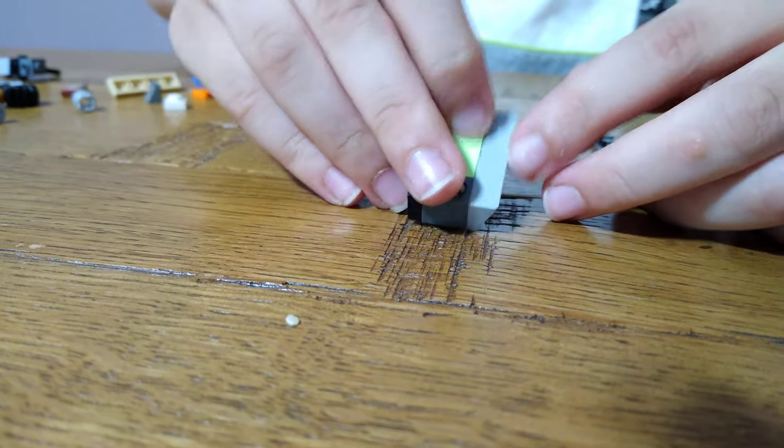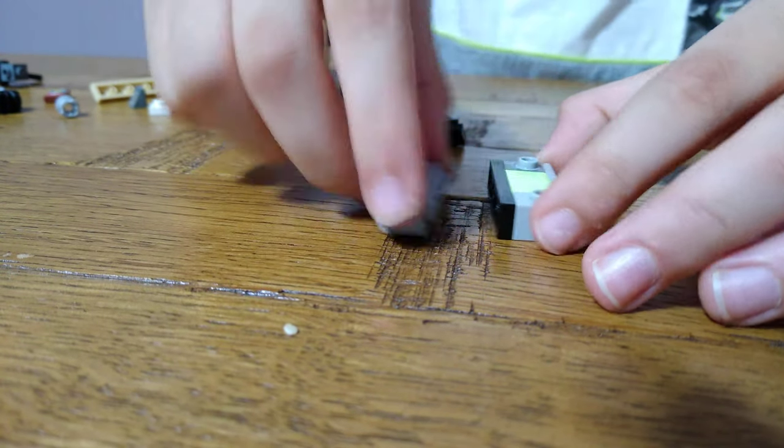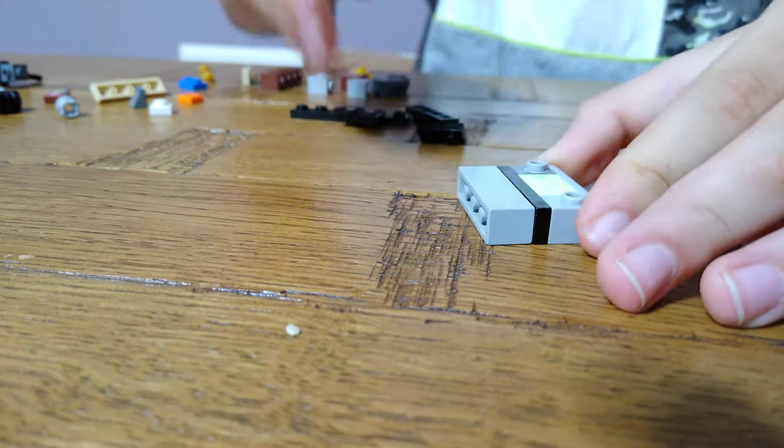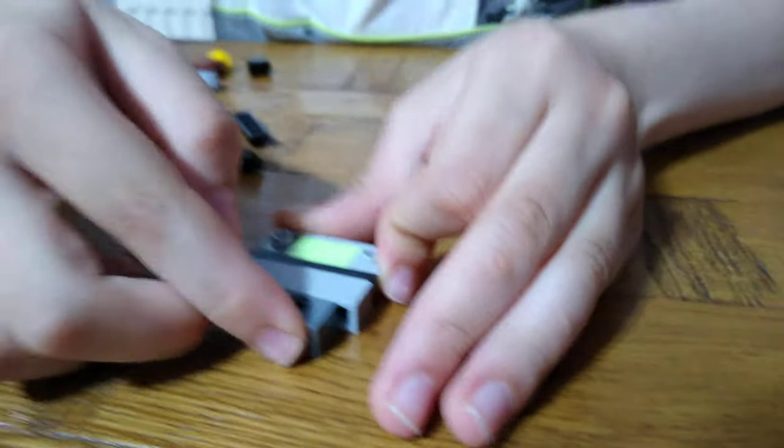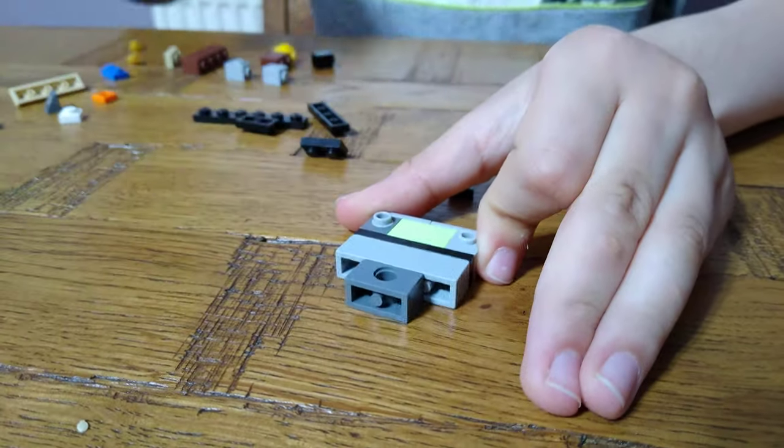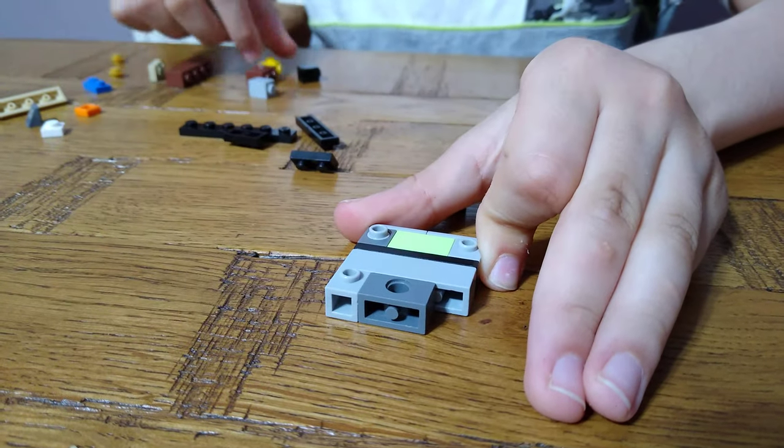Then we're going to need this brick, simply put it on, and then this brick with the hole, put it on that. Then get another two of these.